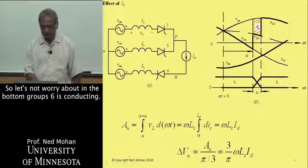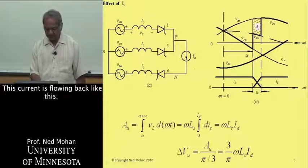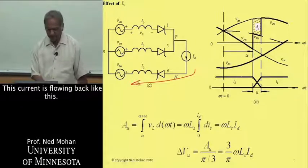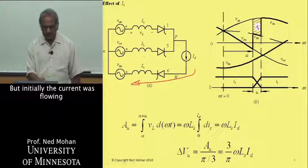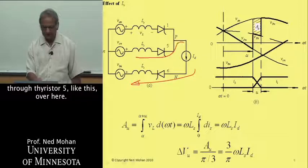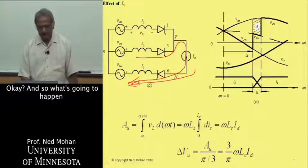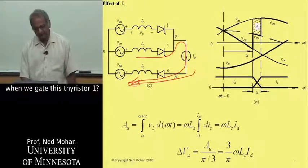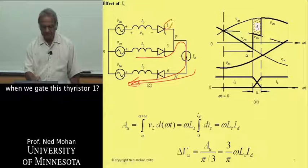Here let's say that initially 5 is conducting here. In the bottom group, 6 is conducting. This current is flowing back like this. But initially the current was flowing through thyristor 5 like this over here.